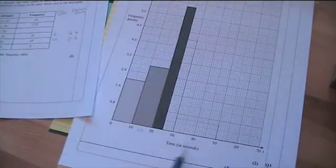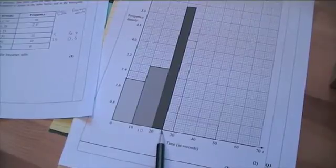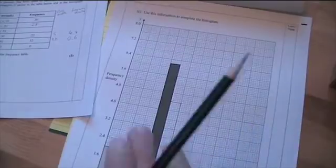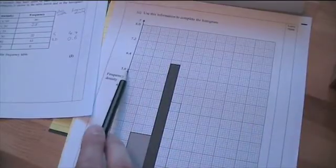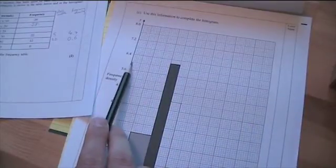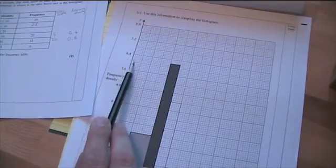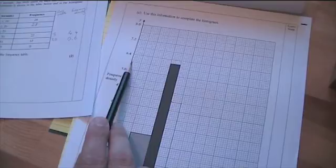Next one, the width of this bar is 5. And the height, you need to be quite careful here. That one there would be, it goes from between 5.6 and 6.4. So, halfway up there would be 6.